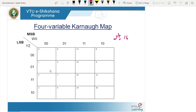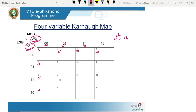For min terms, we enter 1 into the K-map; for max terms, we enter 0. The MSB side corresponds to variables W and X, and the LSB side to Y and Z. The cells are numbered 0 through 15: 0000 = 0, 0001 = 1, 0010 = 2, 0011 = 3, and so on up to 15. All 16 cells are represented from 0 to 15, with each number being the decimal equivalent of that particular cell.